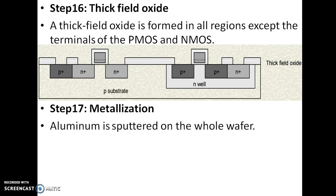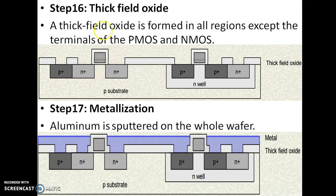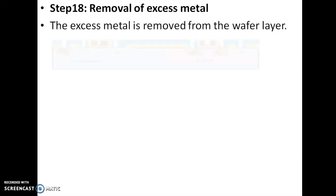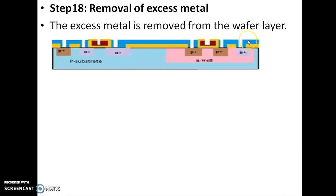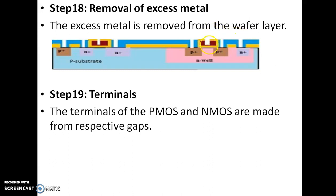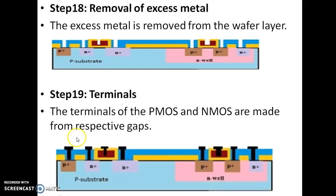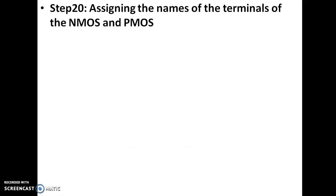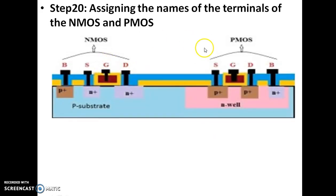Metallization: aluminium is sputtered on the whole wafer to make contacts for the terminals of NMOS and PMOS. Removal of excess material: the excess aluminium is removed, and the terminals of PMOS and NMOS are defined for their respective regions — four terminals for the NMOS and four terminals for the PMOS. Finally, the terminals are named: for NMOS — body, source, gate, and drain; for PMOS — source, gate, drain, and body. This completes the fabrication of CMOS.